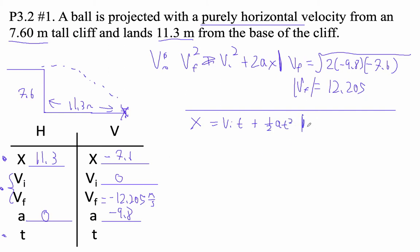So negative 7.6. Remember, the initial velocity is 0, so that goes away. So that equals 1 half times negative 9.8 times t squared. So let's just solve this.